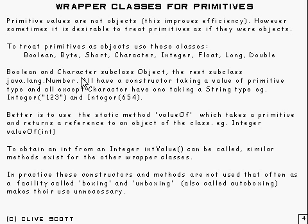Now Boolean and Character, they subclass Object, and the rest of them subclass something called Number. Number's got some other subclasses as well which I've not mentioned here, but those are for arbitrary precision arithmetic. And Number subclasses Object, so fairly straightforward.